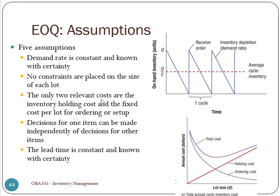Number three: the only two relevant costs are the inventory holding costs and the fixed cost per lot for ordering or setup. In real life, there will be other kinds of costs — one of them is what we call obsolescence costs. So if a product is perishable, like milk or vegetables in a grocery store, if we order too much and can't sell them, they will go bad. But we're not considering that in our EOQ formula.